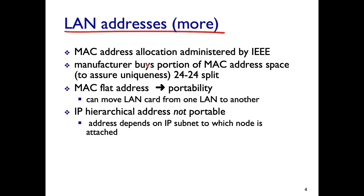MAC address allocation is done by IEEE — the Institute for Electrical and Electronic Engineers — which is the largest professional body in the world. There's a 24/24 split for the 48-bit MAC address: the first 24 bits are allocated to a manufacturer. If you want to produce adapter cards, you apply to IEEE to get your 24-bit company address, and then you can produce up to 2^24 different adapter cards, ensuring uniqueness for every adapter in the world.